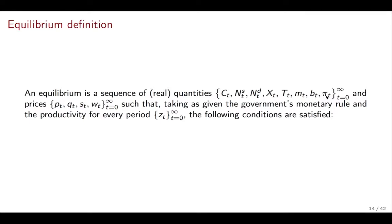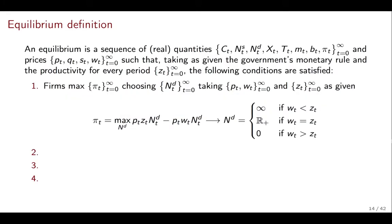Then we have some prices, which of course are taken as given by the consumers: PT, the price of consumption goods; QT and ST, the price of bonds; and WT, the real wage. And these sequences of quantities and prices have to be such that markets are going to be clearing and optimality is satisfied while taking as given the government's monetary rule, so that's going to be alpha, and the productivity for every period, that's going to be ZT. And so what are the conditions that have to be satisfied?